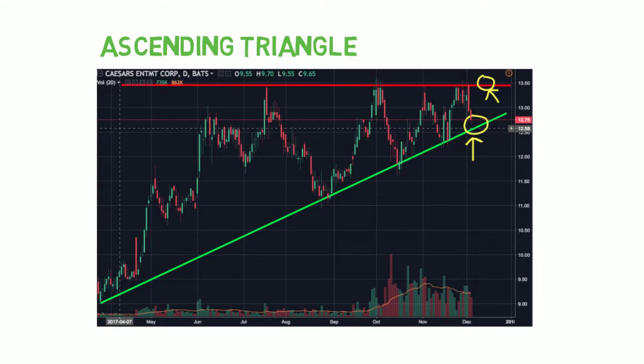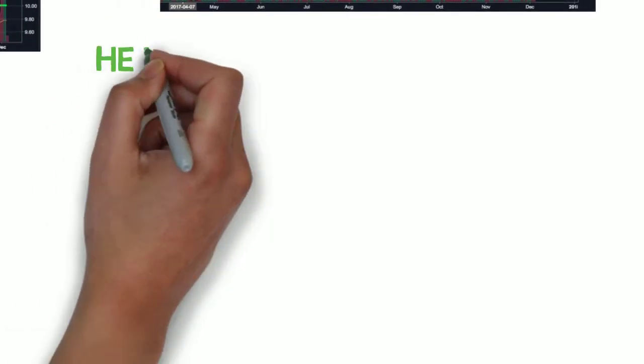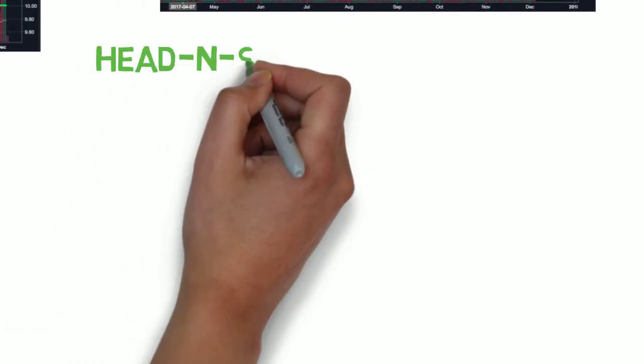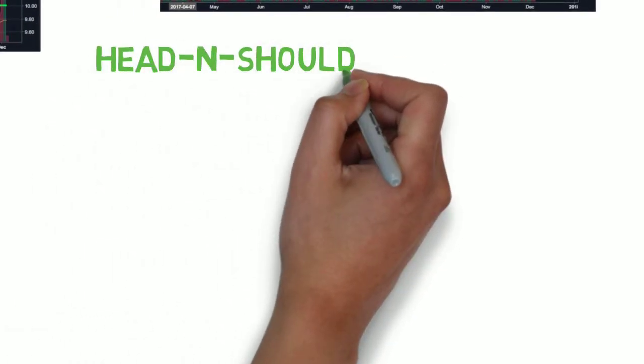Once it starts consolidating closer and closer to the peak of the triangle, you will see it either break down past the green line going downward, or break upwards forming a rally.